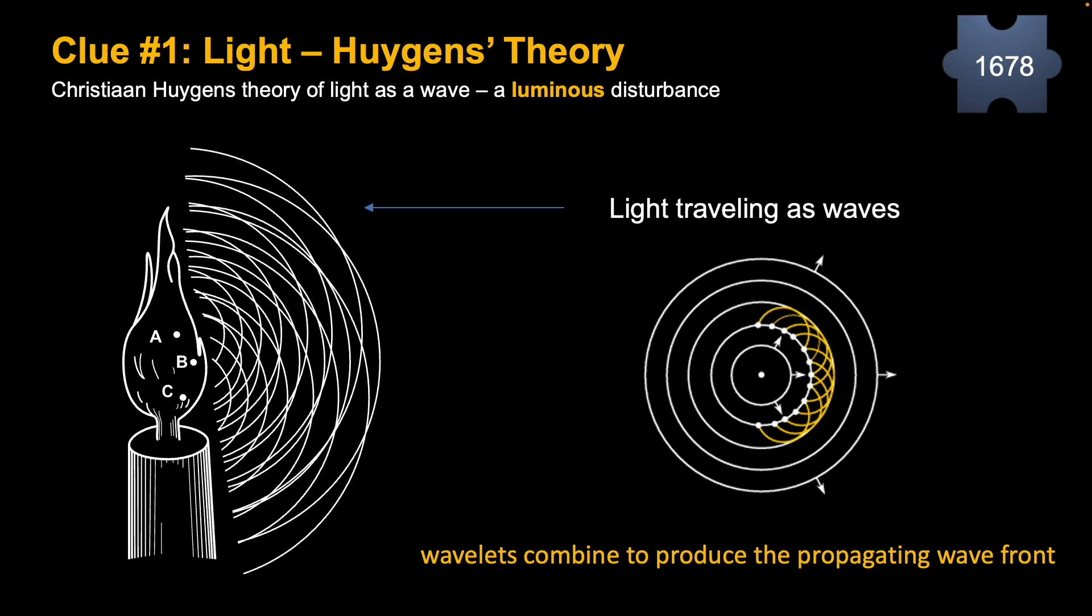Now Huygens also came up with the Huygens principle, which is that wavelets, smaller little waves, combine to form larger ones producing a wave front.